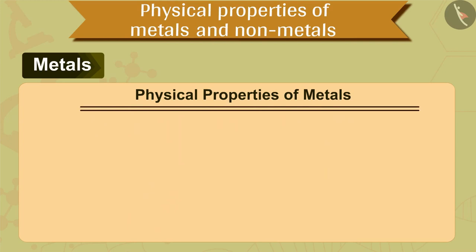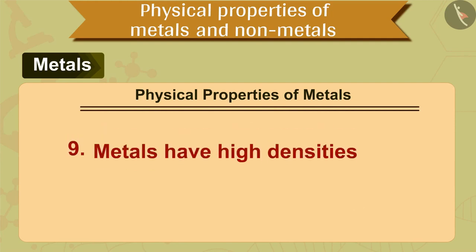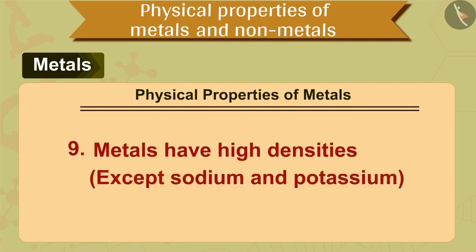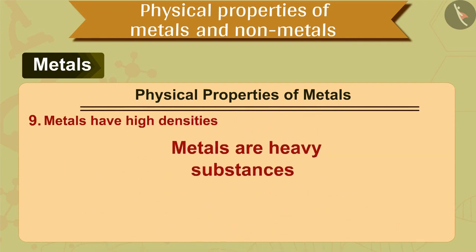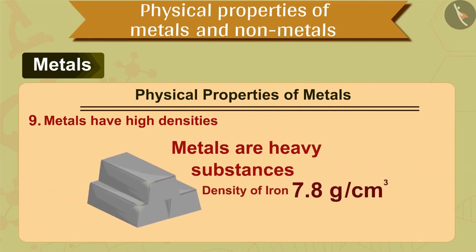The ninth property is that metals have high densities, except sodium and potassium. It means that these metals are heavy substances. For example, the density of iron is 7.8 grams per centimeter cube, which is quite high.